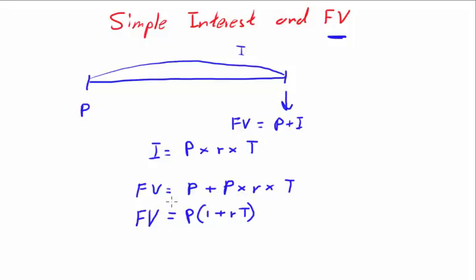You could easily find the interest and add it to the principal to get future value. But the point of this equation is that it encompasses four variables — so by using three of the variables you can find the remaining one. Let me show you how that's done.